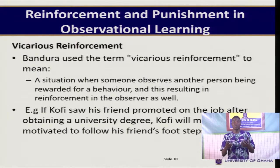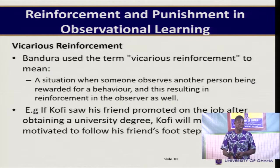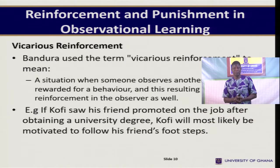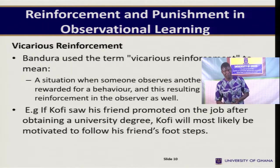For instance, if Kofi saw his friend promoted on the job after obtaining a university degree, Kofi will most likely be motivated to follow his friend's footsteps by studying hard to obtain the degree so that he also gets promoted on the job. So with vicarious reinforcement, the reinforcement is actually not with the person observing initially — rather it is on another person, and that gets the observer motivated or reinforced to want to engage in that behavior.